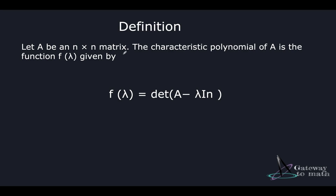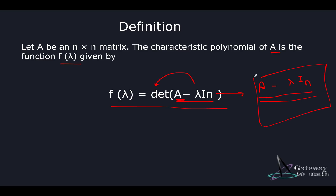The definition says that let A be an n×n matrix. The characteristic polynomial of A is the function f(λ) given by the determinant of A minus λ times the identity matrix I_n. When we subtract this expression and compute the determinant, that is called the characteristic polynomial of the matrix A. The characteristic polynomial expression is: f(λ) = det(A − λI_n).